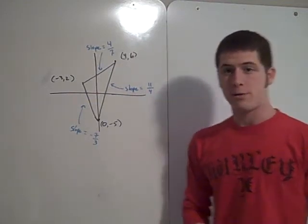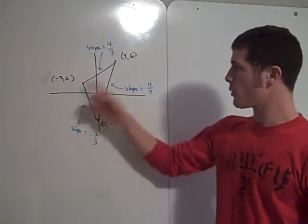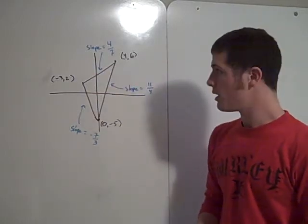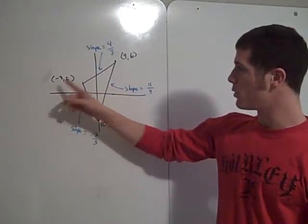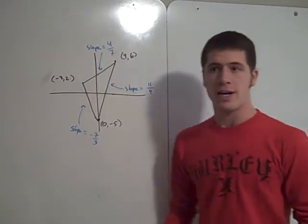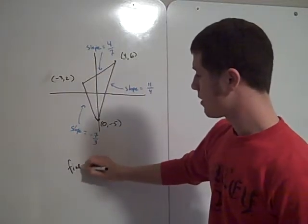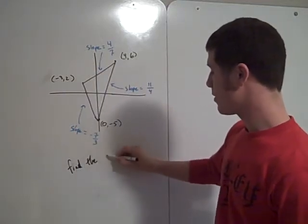Okay, this is a problem that I received via email. It was given three points in the Cartesian plane, specifically negative 3, 2, 4, 6, and 0, negative 5, find the coordinates of the orthocenter. So find the orthocenter.